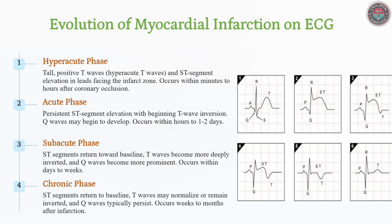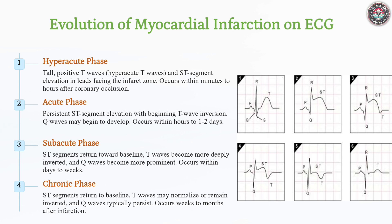Myocardial infarction progresses through distinct ECG phases. In the hyperacute phase (minutes to hours), peaked T-waves and ST elevation appear. The acute phase (hours to days) shows persistent ST elevation and emerging Q waves signaling necrosis. During the subacute phase (days to weeks), ST segments return to baseline and T-wave inversion becomes prominent. In the chronic phase (weeks to months), Q waves persist as markers of prior infarction, while T waves may normalize. Identifying these phases helps assess infarct timing and guide management.